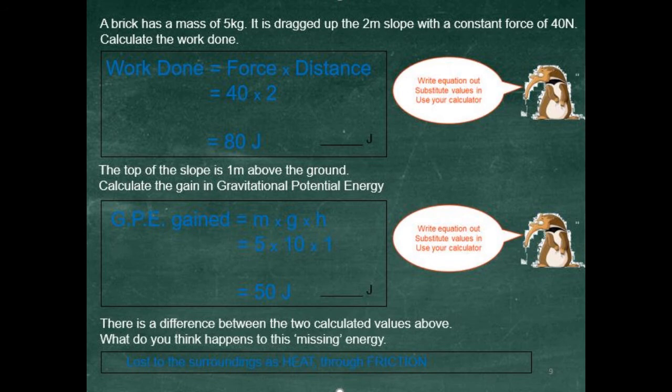Here's an example of the work done in dragging a 5 kilogram brick 2 meters up a slope. There's then a second calculation, lifting the brick from the floor to the top of the slope, which is one meter from the ground. The difference between these two is the energy lost through friction.